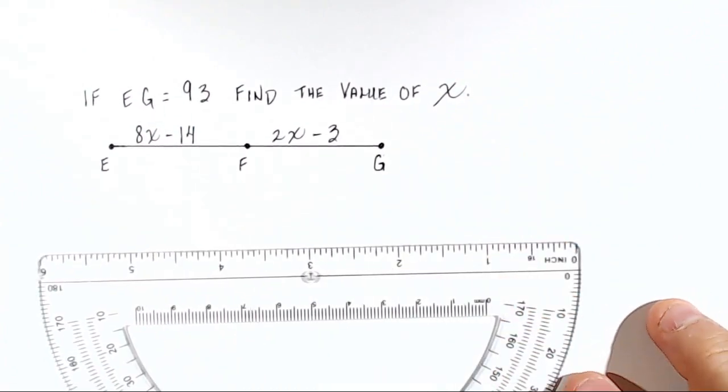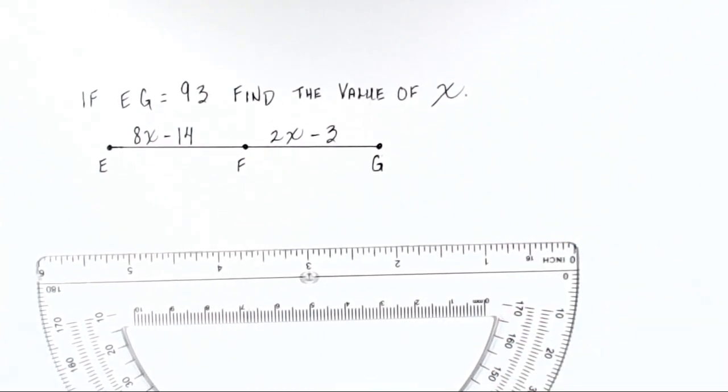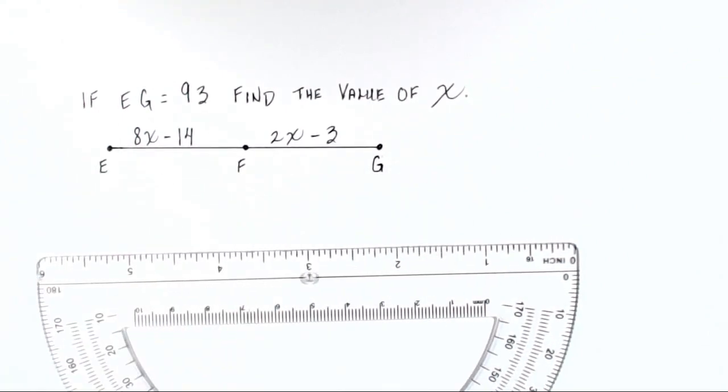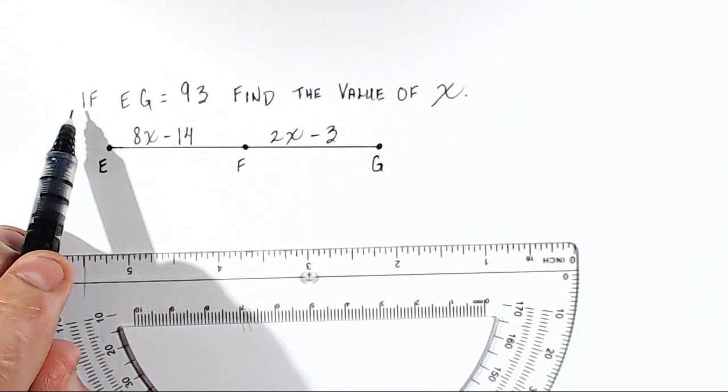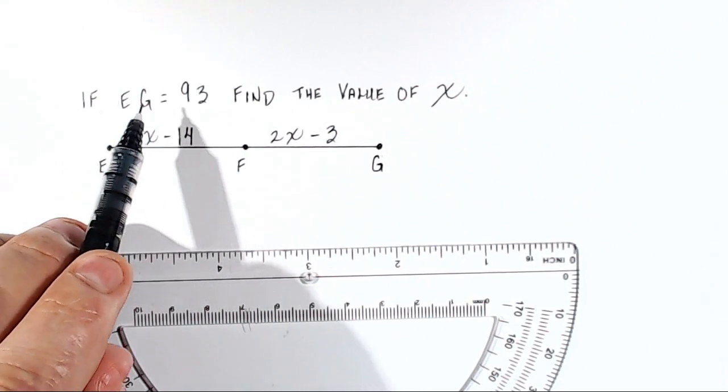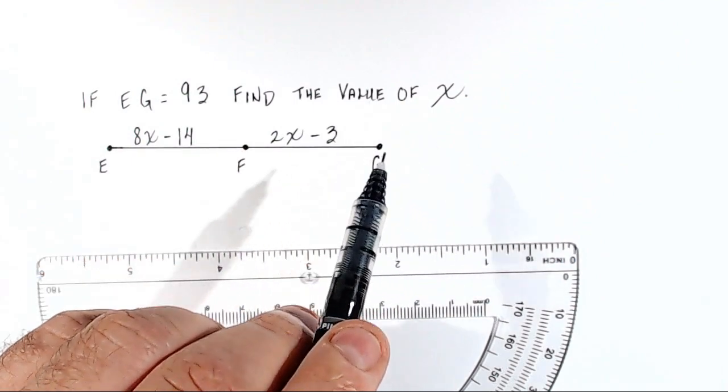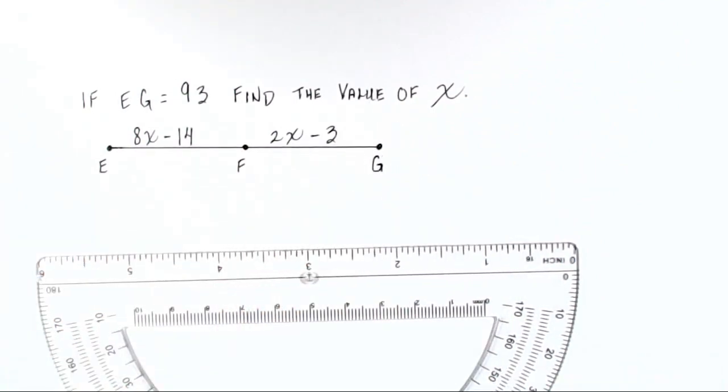This is a line segment, and as you see, it's broken up into pieces. What we are given is that if line segment EG equals 93, find the value of X. All right, so let's take a look at what we've got and breathe in and out and realize that we've seen this before. This is something we can do.